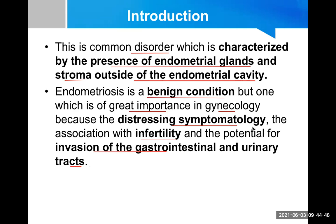Adenomyosis is endometriosis of the uterine muscle itself — the endometrial tissue is present deeper into the muscle — causing menorrhagia and dysmenorrhea. In endometriosis of the ovary, fallopian tube, or abdominal cavity, there will be bleeding every month, and collection of blood can give rise to pain. In the fallopian tube or ovary, endometriosis can result in infertility.